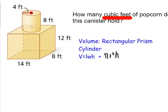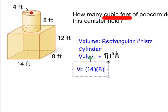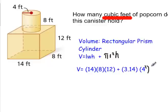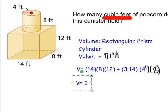Let's plug in some numbers. The volume equals 14 times 8 times 12, plus the volume of the cylinder, which is 3.14 times 4 squared times 8, the height of the cylinder. Hopefully you come up with the volume is 1,745.92 feet.